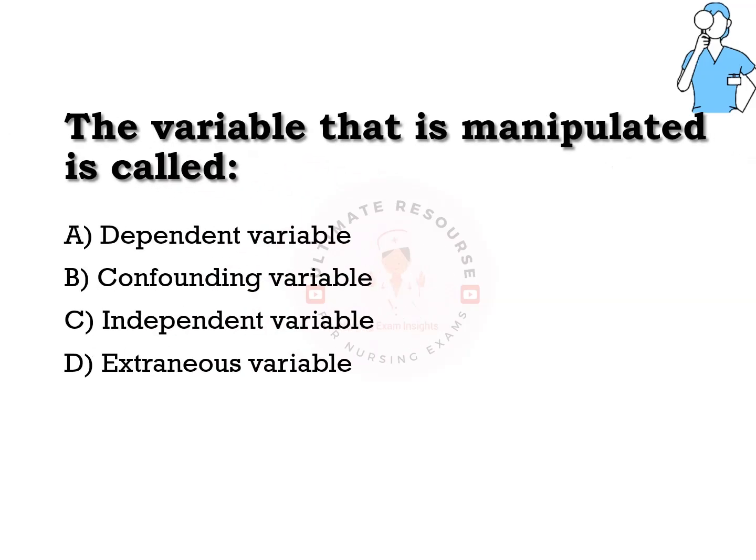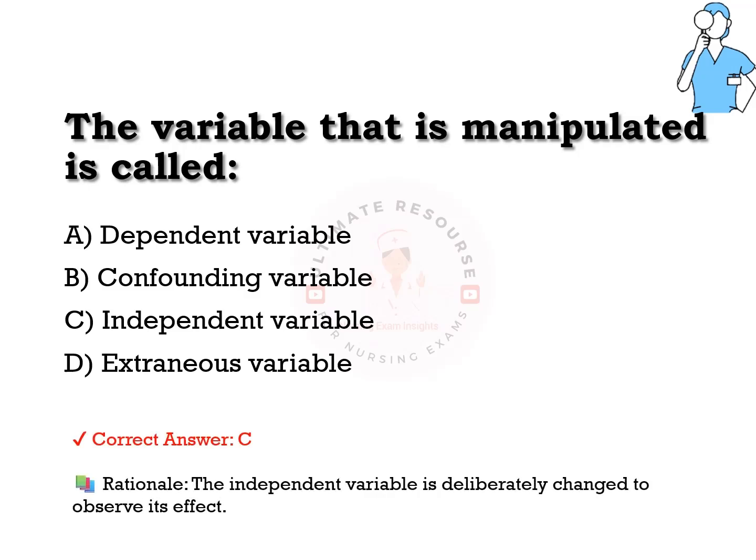The variable that is manipulated is called: options are a) dependent variable, b) confounding variable, c) independent variable, d) extraneous variable. The answer is c) independent variable. The independent variable is deliberately changed to observe its effect.